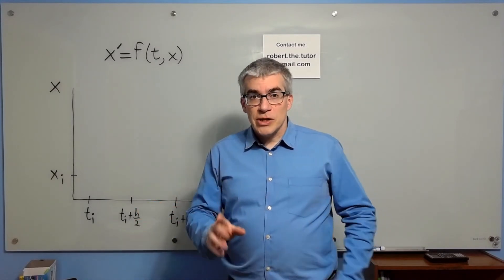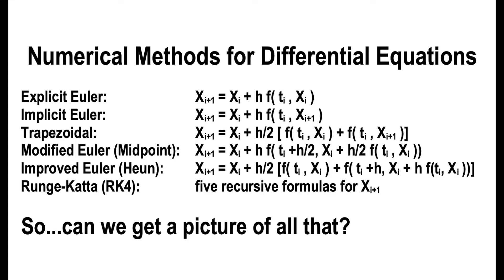So first of all, here are the formulas. xi is where you are now, ti is the time you're at now. You want to get to ti plus h, the next time step, and you want to know what xi plus 1 is, and these are different formulas.